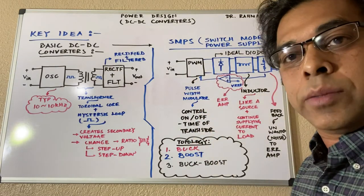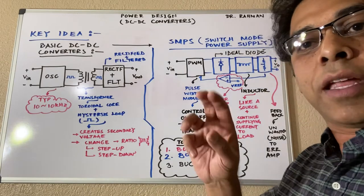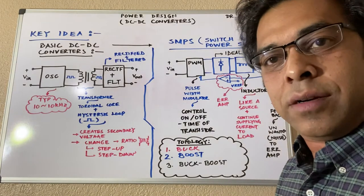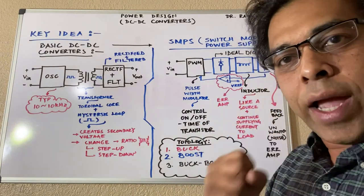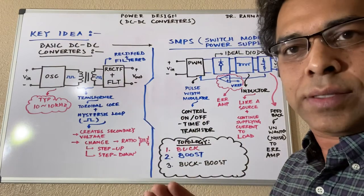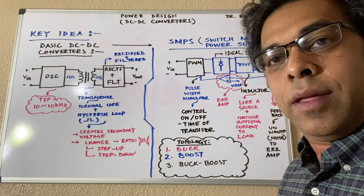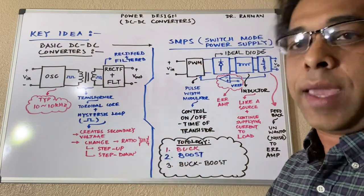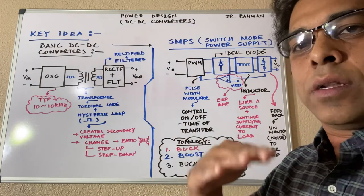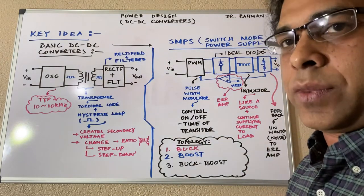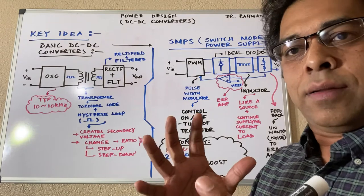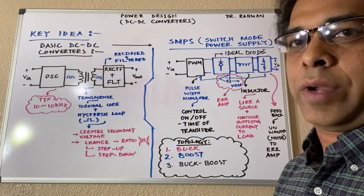You can control the PWM switching frequency — make it faster or slower — and choose the inductor so it delivers the right amount of current. The feedback loop through the error amplifier minimizes unwanted signals. This is why SMPS is a very efficient DC-DC converter design.